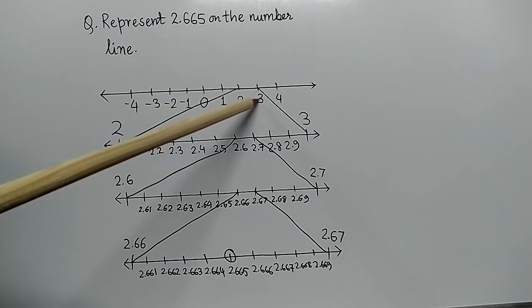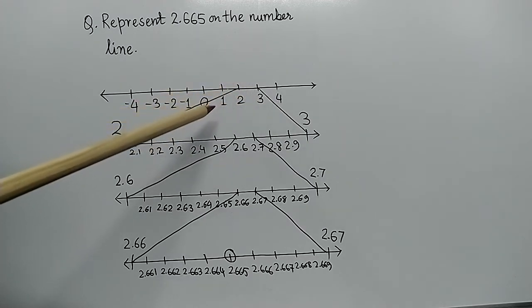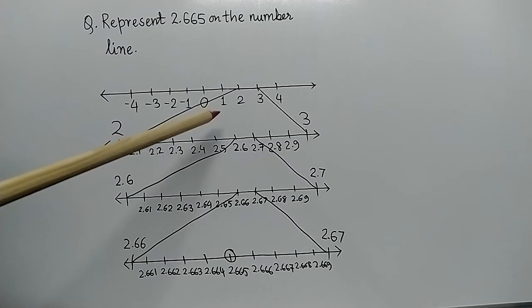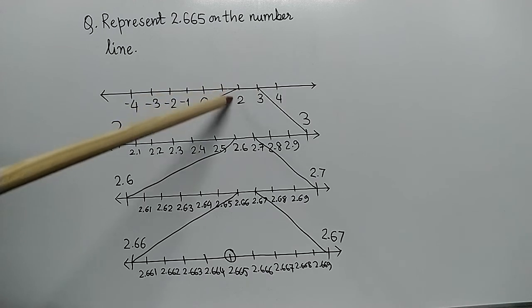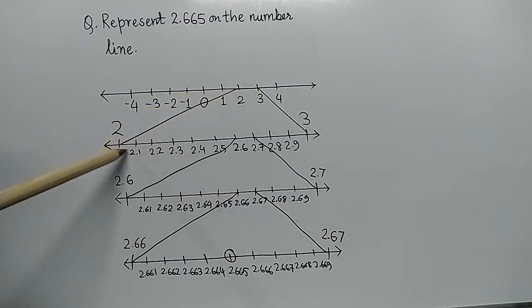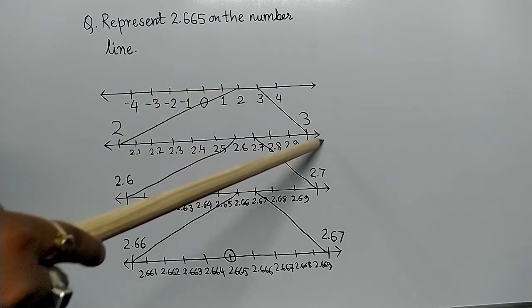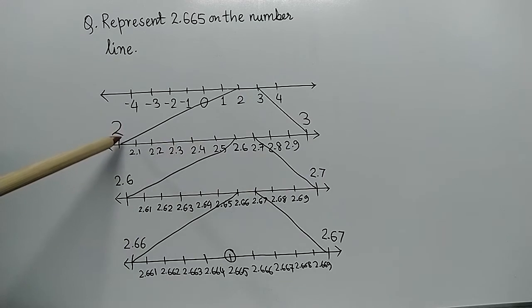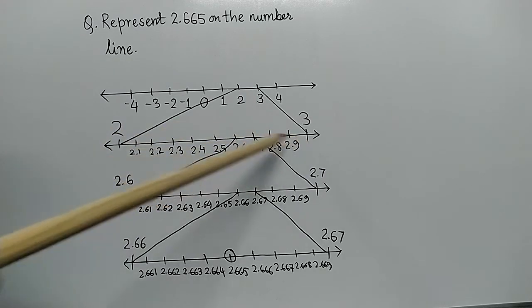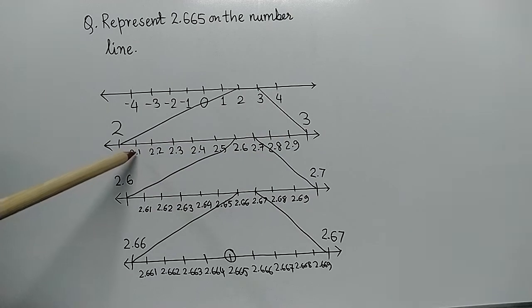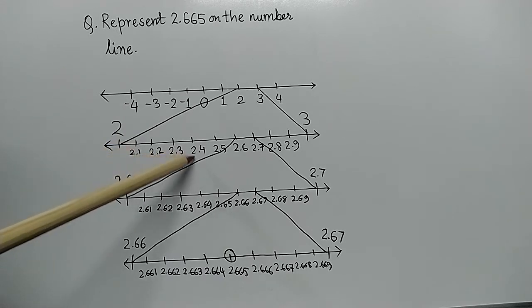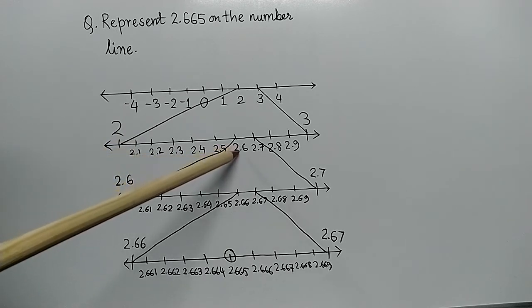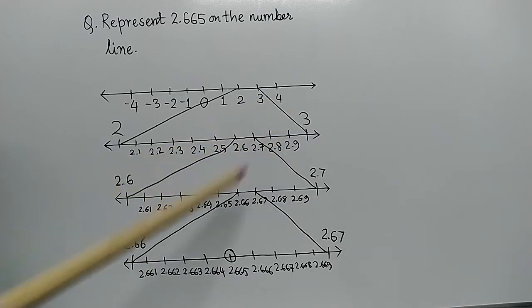Between 2 and 3 there are other numbers as well, such as 2.1, 2.2, 2.3, 2.4, and so on. We have magnified the region between 2 and 3, and we write the decimal numbers in between: 2.1, 2.2, 2.3, 2.4, 2.5, 2.6, 2.7, 2.8.